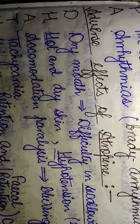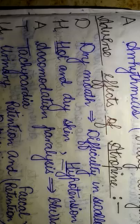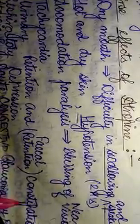The A of DHATURA refers to accommodation paralysis, that is blurring of near vision — patients on atropine therapy can experience accommodation paralysis leading to blurring of near vision. The T refers to tachycardia, which patients can experience as an adverse effect. The U of DHATURA refers to urinary retention and fecal retention, commonly called constipation.